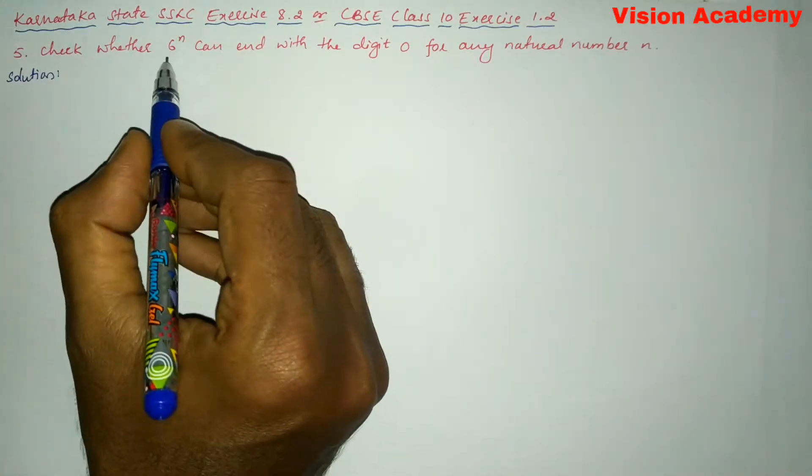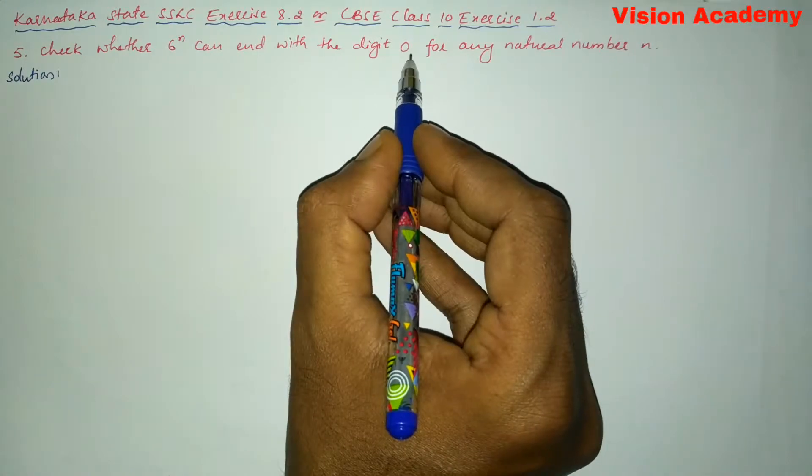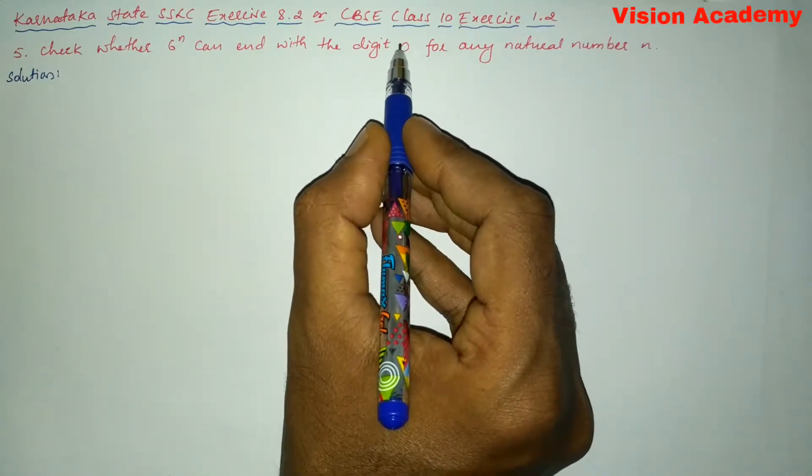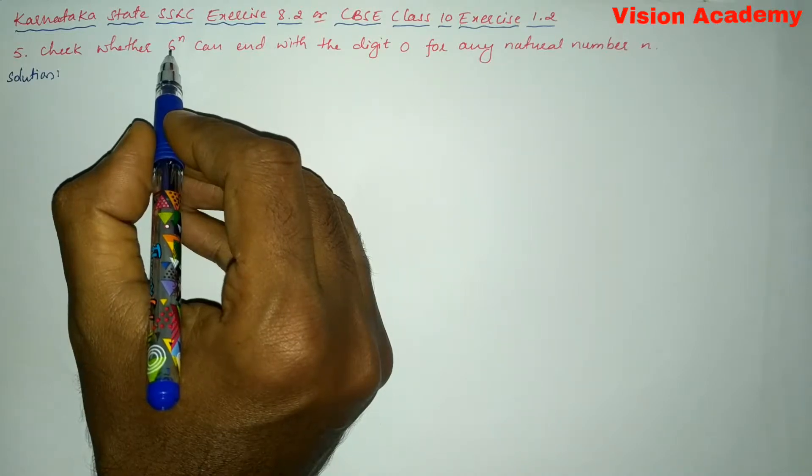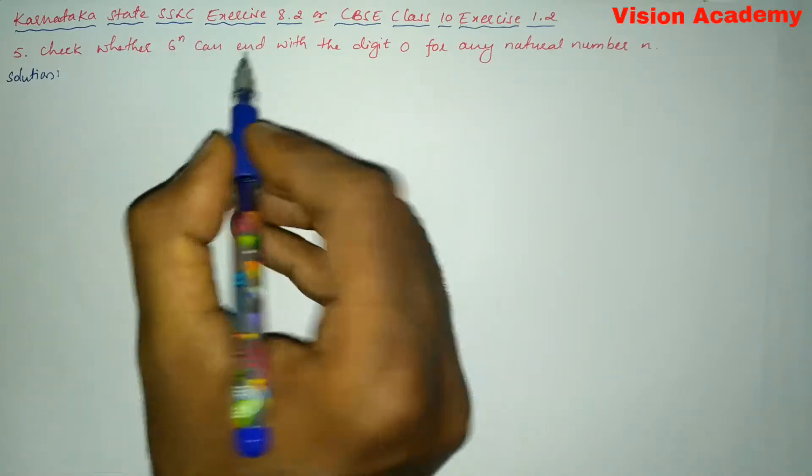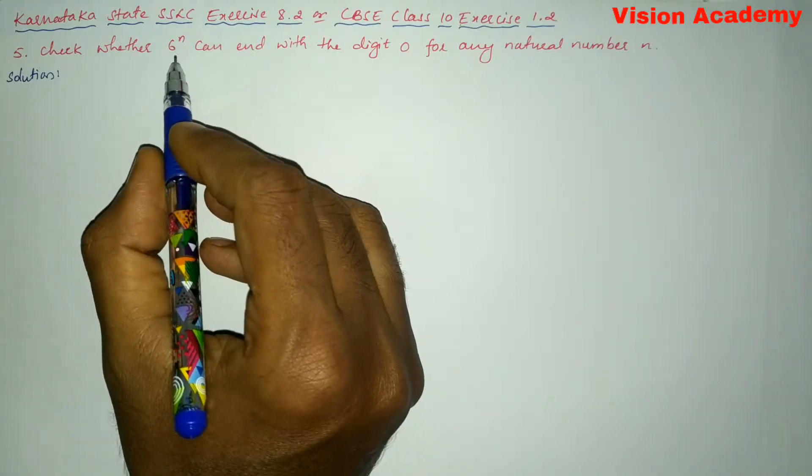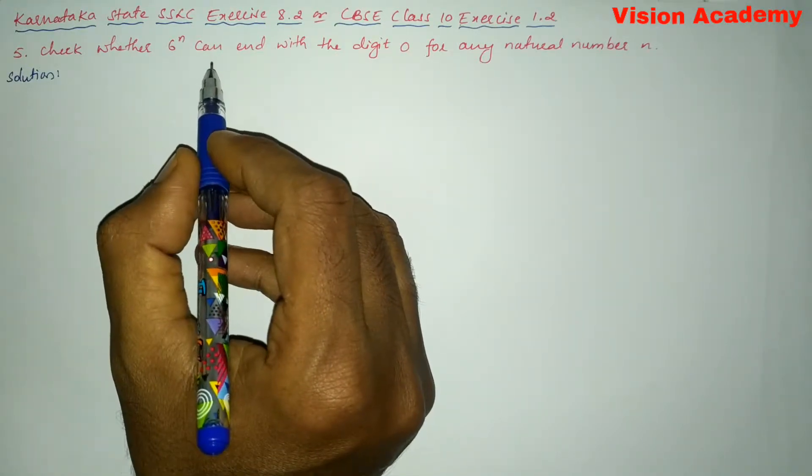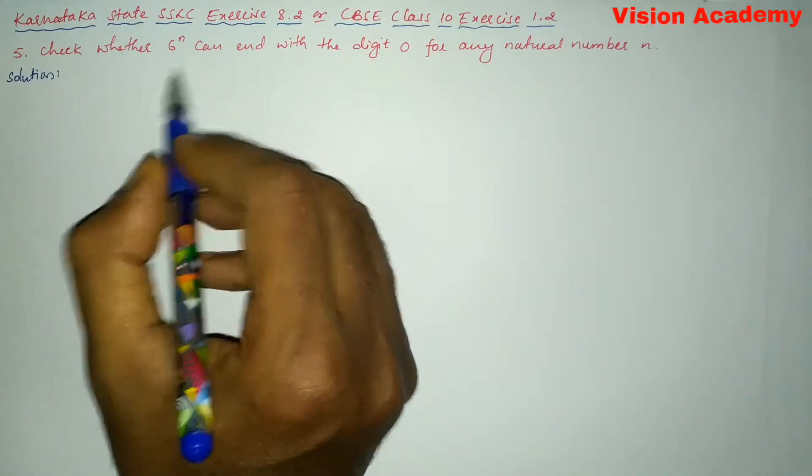Here in the question they have given 6 to the power n that end with the digit 0 means this given number must be either divisible by 10 or it may be divisible by 2 or it may be divisible by 5. If it is divisible by both 2 and 5 then it is the product of two prime factors 2 and 5 gives us 10.